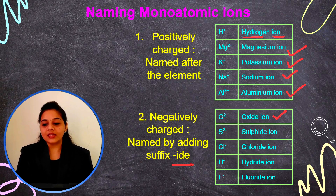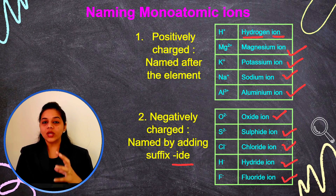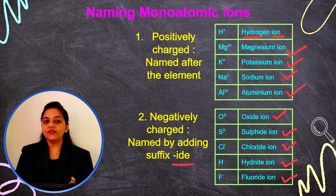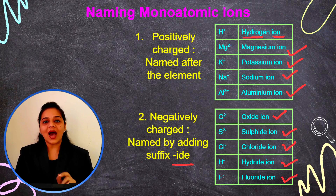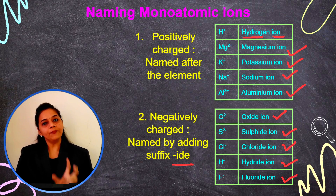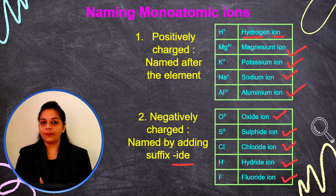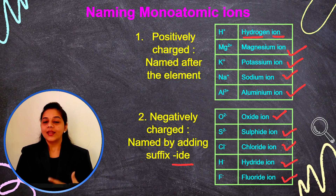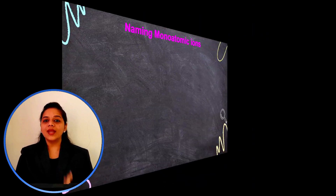Examples of negatively charged monoatomic ions with the '-ide' suffix: oxide ion, sulfide ion, chloride ion, hydride ion, and fluoride ion. So for positively charged monoatomic ions, we write the element name followed by 'ion'. For negatively charged monoatomic ions, we add '-ide' after the base name of the element: oxide, sulfide, chloride, hydride, nitride.